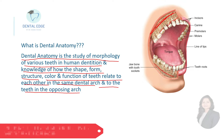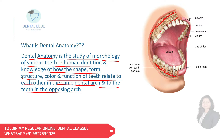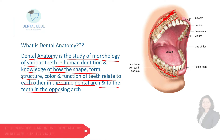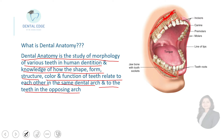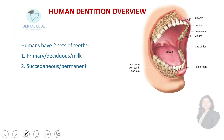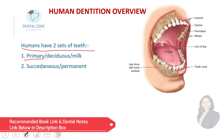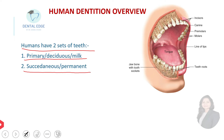The upper jaw or upper arch is called the maxilla, and the lower arch or lower jaw is called the mandible. Humans have two sets of teeth: primary or deciduous teeth, and succedaneous or permanent teeth.